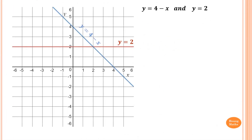Please stop the video and do this one yourself. The point of intersection between these two lines is here. The x value is 2, so x = 2, and the y value is 2 as well, so y = 2. Therefore, x = 2 and y = 2.